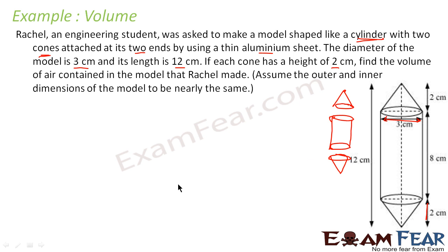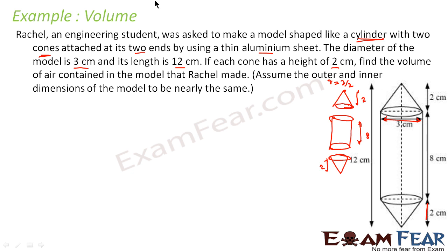So there are three figures here. The height of each cone is 2 cm, the height of the cylinder is 8 cm, and the radius of each figure — both cone and cylinder — is 3/2 cm, because the diameter is 3, so r = 3/2 cm. Let me write the dimensions required here.